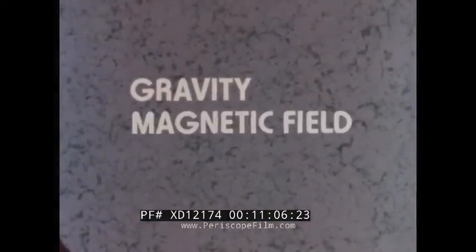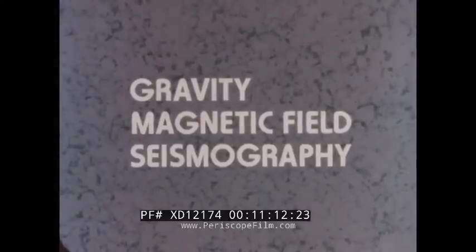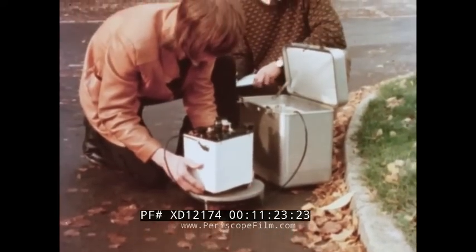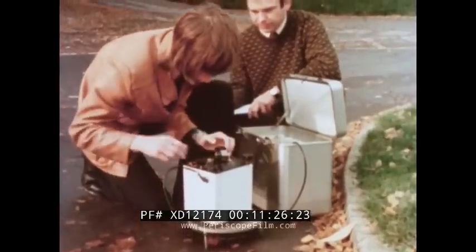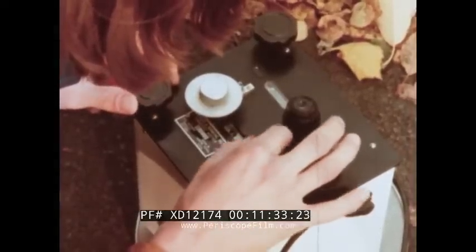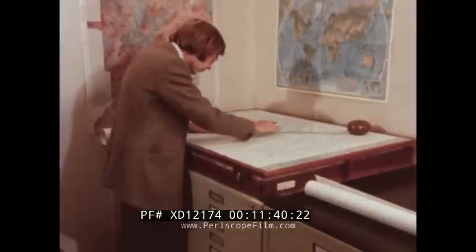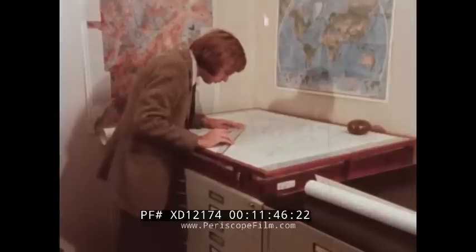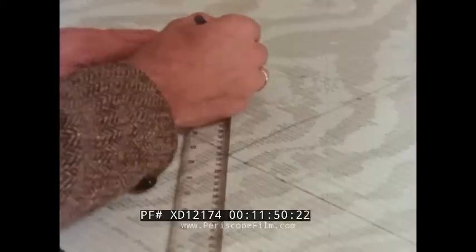Other methods measure small variations in the earth's gravity and in its magnetic field, or use a technique called seismography. All these are called geophysical techniques. The gravity meter measures the force of gravity at the earth's surface. Small variations in this force can suggest the way rocks of different densities are distributed below the surface. At sea, a meter can be lowered to the sea bed. The results are studied using a computer and may indicate the presence of interesting rock formations below. Less dense rocks, for instance, are more likely to bear oil.